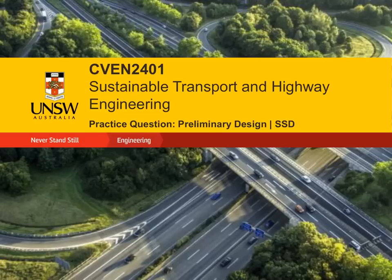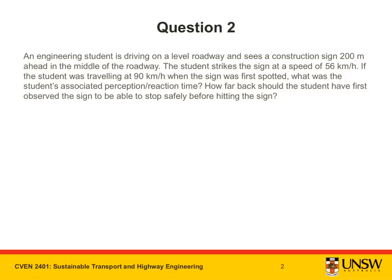I'm going to underline the key points as I read out the question. An engineering student is driving on a level roadway and sees a construction sign 200 meters ahead in the middle of the roadway. The student strikes the sign at a speed of 56 kilometers per hour. If the student was traveling at 90 kilometers per hour when the sign was first spotted, what was the student's associated perception reaction time? How far back should the student have first observed the sign to be able to stop safely before hitting the sign?